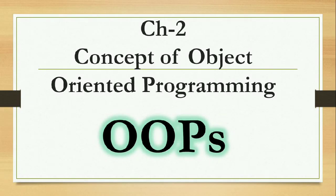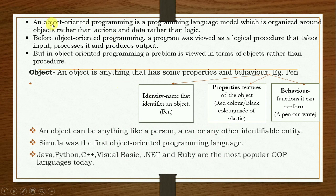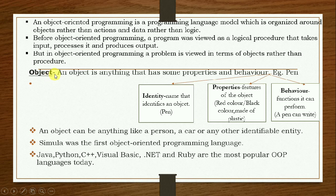Today we are going to start chapter number two: concepts of object-oriented programming. Object-oriented programming is a programming language model which is organized around objects rather than actions, and data rather than logic. Before object-oriented programming, a program was viewed as a logical procedure that takes input, processes it, and produces output. But in object-oriented programming, a problem is viewed in terms of objects rather than procedure. The languages in which procedure was taken care of were known as procedural languages.